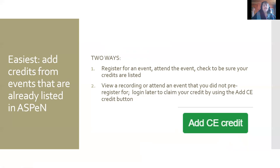The easiest ways to get credits: you can register for an event like today's and attend it, then just check that your credits are listed. We assume when you register that you intend to attend live. You don't need to register for State Library webinars if you're only planning to watch the recording, but you can. If you neither watch the recording nor attend live, you need to delete that credit by opening a help ticket. Don't register for things you're not sure you'll participate in.